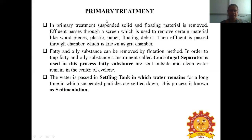In primary treatment, suspended solids and floating materials are removed. The effluent passes through a screen where materials like wooden pieces, plastic, paper, and floating debris are removed. Then the effluent passes through the grit chamber. Fatty and oily substances can be removed by the flotation method, using a centrifugal separator. The fatty substances are sent outside and the clean water remains in the center of the cyclone, which is an integral part of the centrifugal separator.